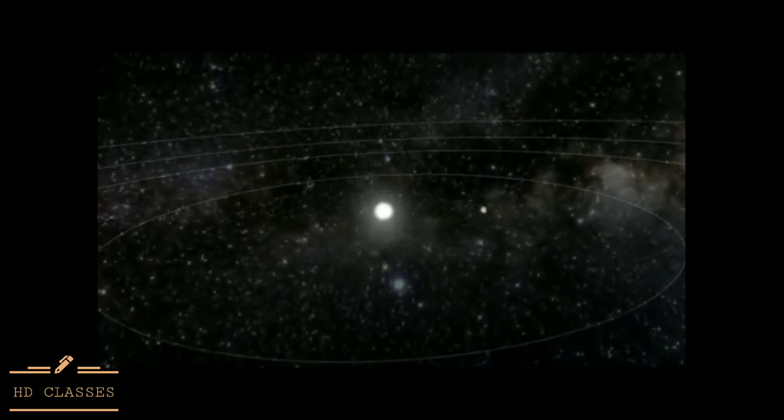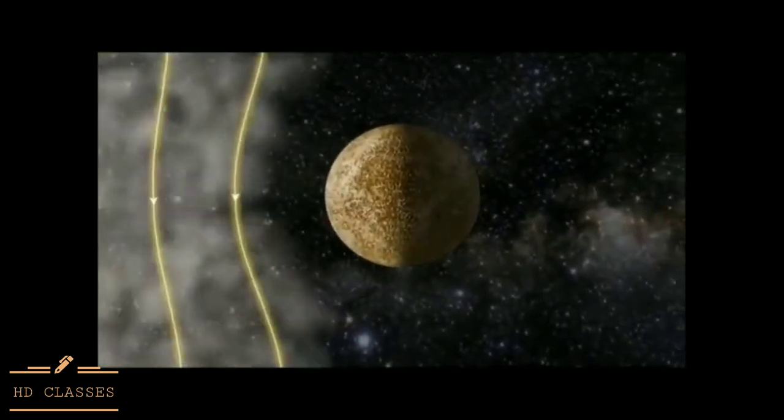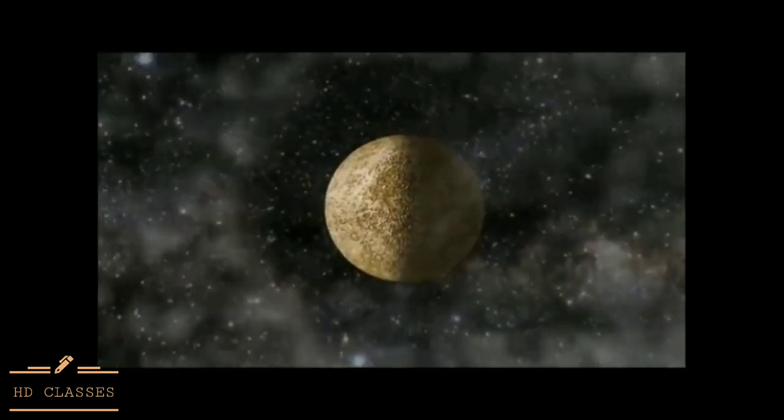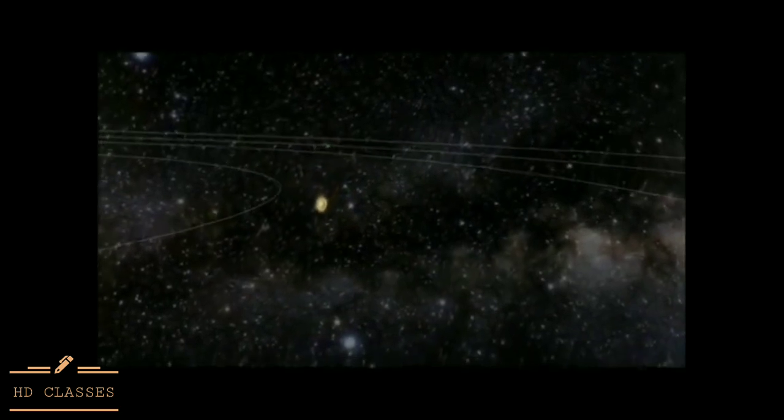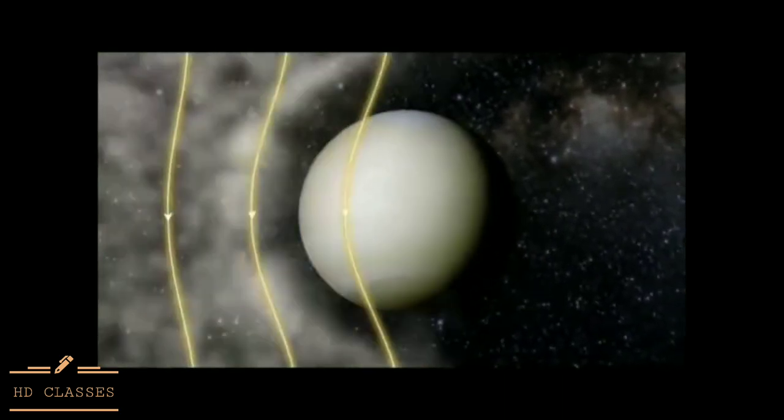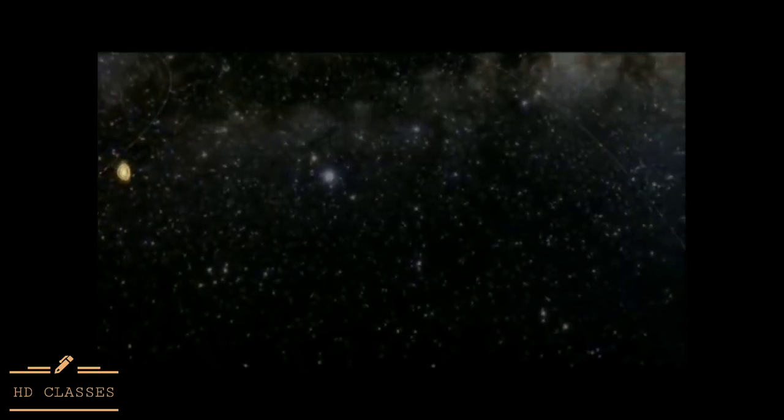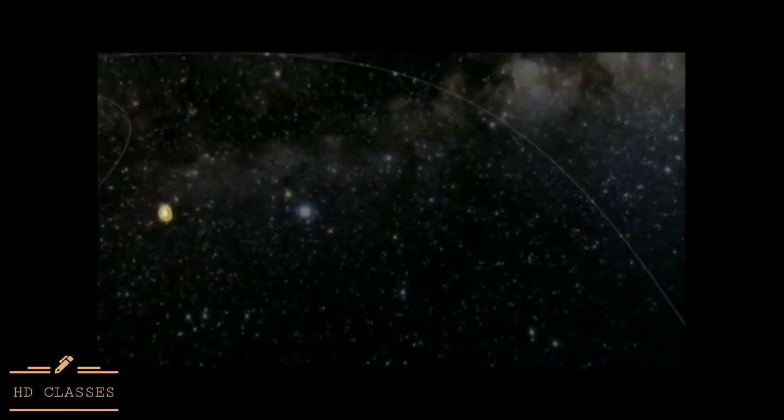The solar storm can reach speeds over 8 million kilometers an hour. After 6 hours, it blows past the planet Mercury. After 12 hours, the planet Venus. And after 18 hours, the solar storm reaches Earth.